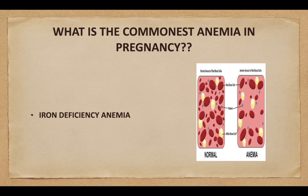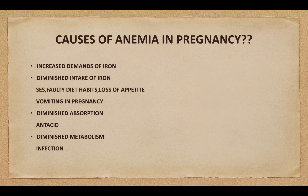The commonest anemia in pregnancy is iron deficiency anemia. Causes of anemia in pregnancy include increased demands of iron, diminished intake of iron in cases like low socio-economic status, faulty diet habits, loss of appetite, and vomiting in pregnancy. Diminished absorption in case of excessive intake of antacids, and diminished metabolism in case of presence of infection.